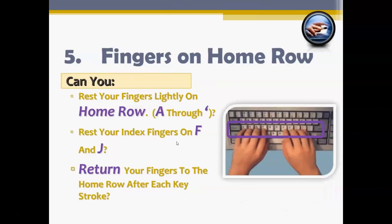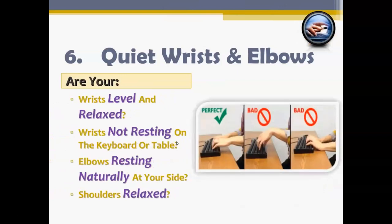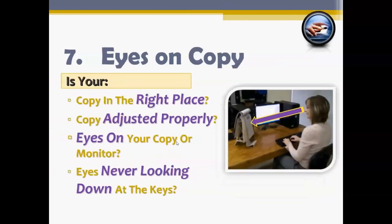With your fingers, you also need to make sure they're resting on the home row — the row from A through the comma key. We call it the home row because this is where your fingers should return after every keystroke. Rest your index fingers on the F and J keys to be in proper keyboarding form. Technique six is quiet wrists and elbows — they should be level and relaxed, not resting on the keyboard or the table, as that will develop carpal tunnel syndrome. Your elbows should rest naturally at your side, shoulders relaxed.